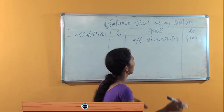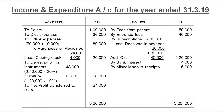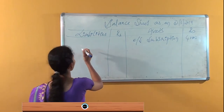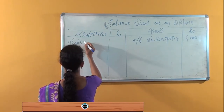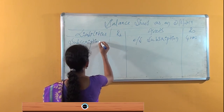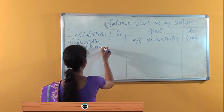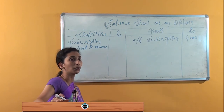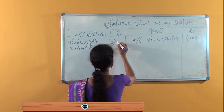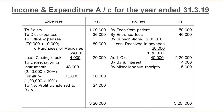Now we move to the liabilities side. Entrance fees are taken as revenue subscription. Subscription received in advance comes under the liabilities side. That amount is 20,000.